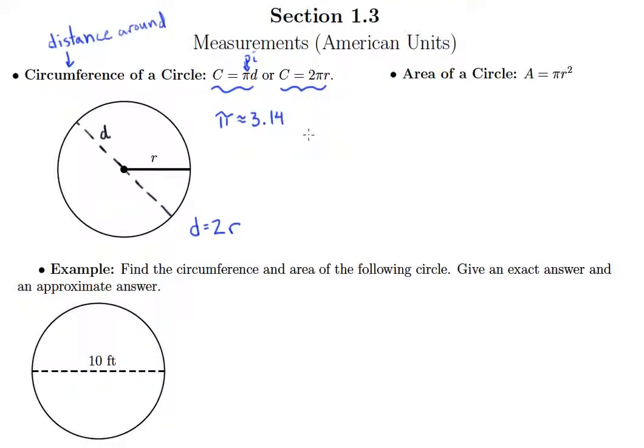Now for the area of a circle, we're only given one formula and that is pi r squared. So area equals pi r squared, and we need the radius for that. If you're ever given the diameter instead of the radius, you need to understand that you'll have to cut that in half first before you can apply this formula.